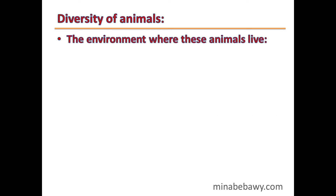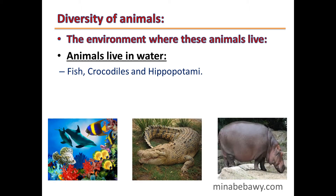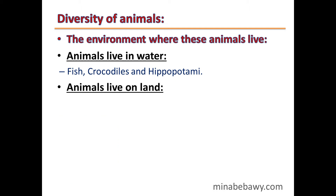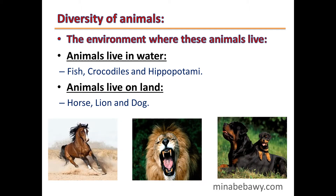The environment where animals live: animals live in water, such as fish, crocodiles and hippopotamia. Animals live on land, such as horse, lion and dog.